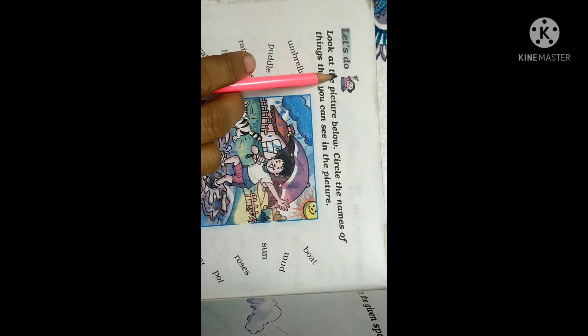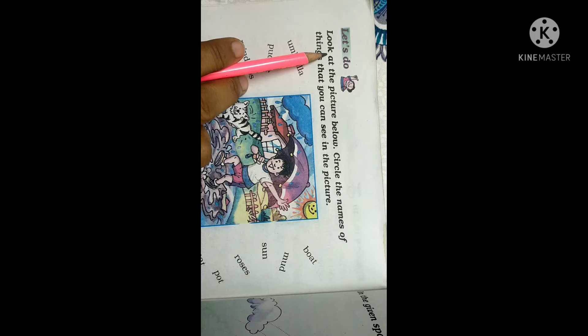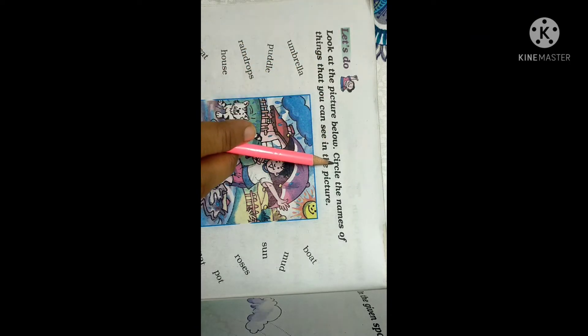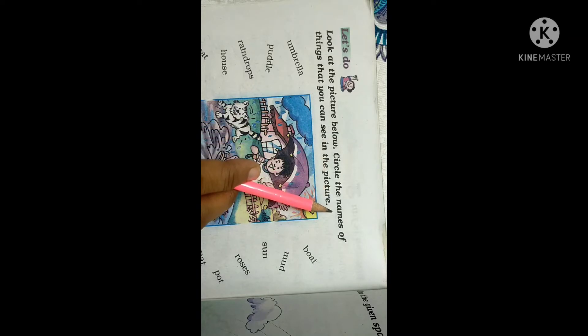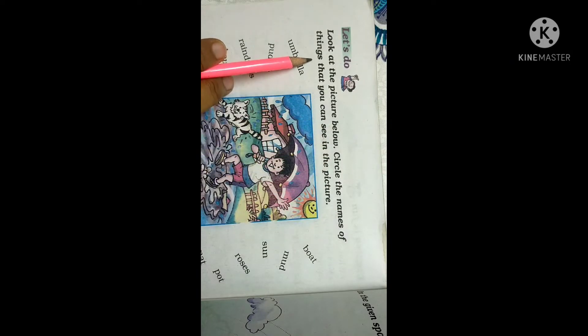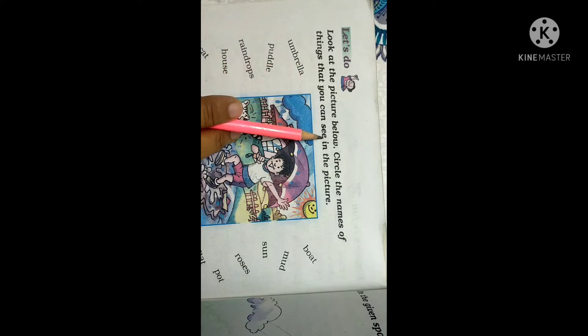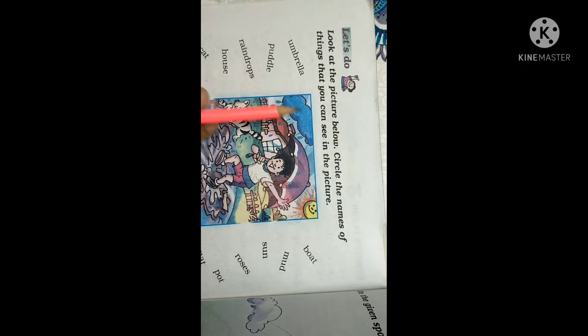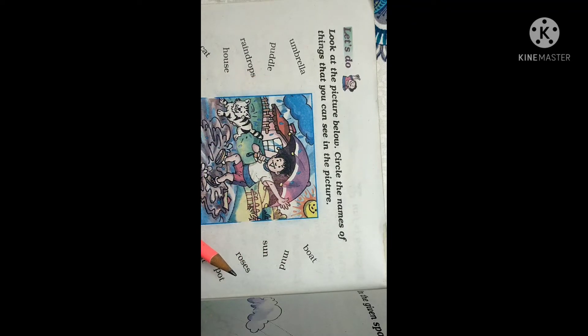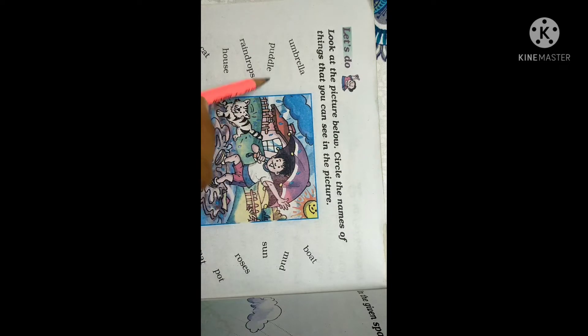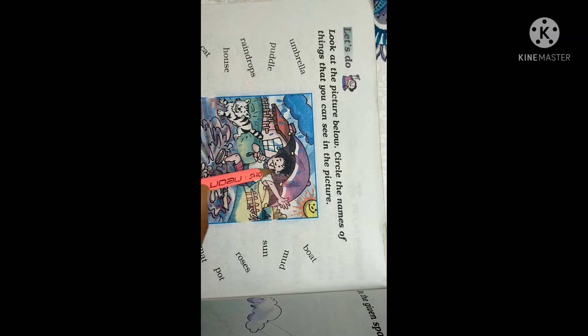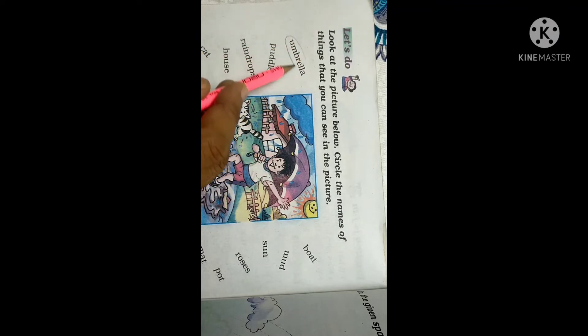Let's do. Look at the picture below. Circle the names of things that you can see in the picture. The picture is given here and the words are given here. What you have to do? You have to circle the words. So, umbrella. Do you have umbrella here? Yes. So circle umbrella.